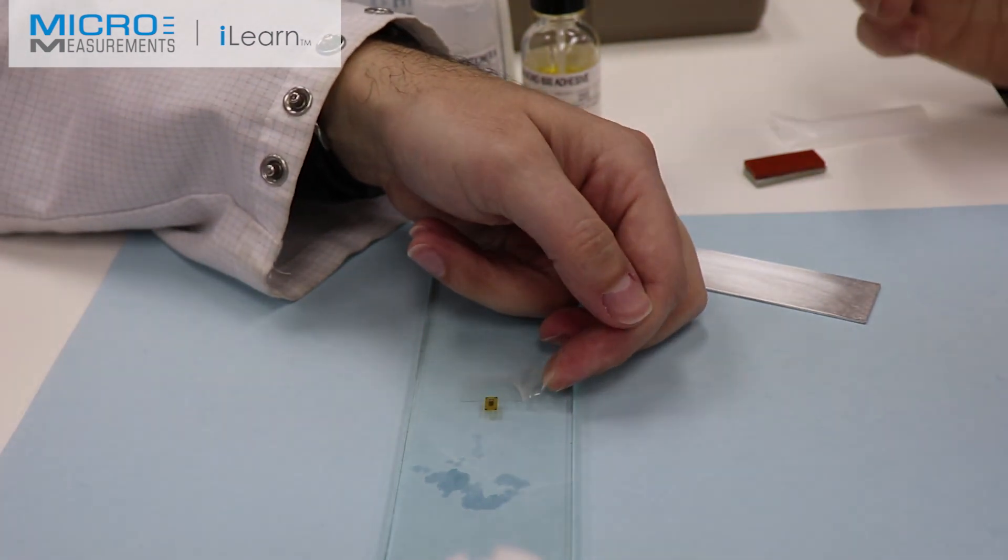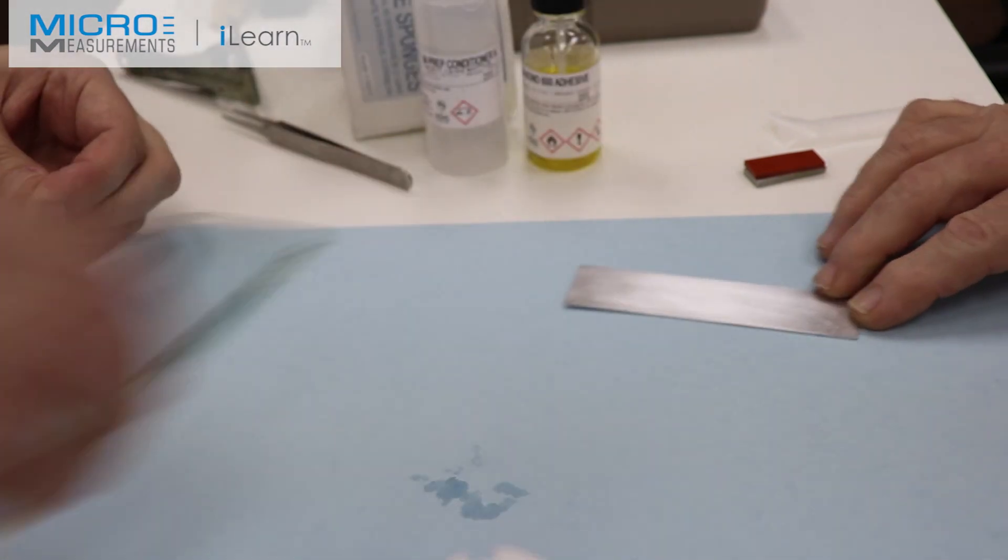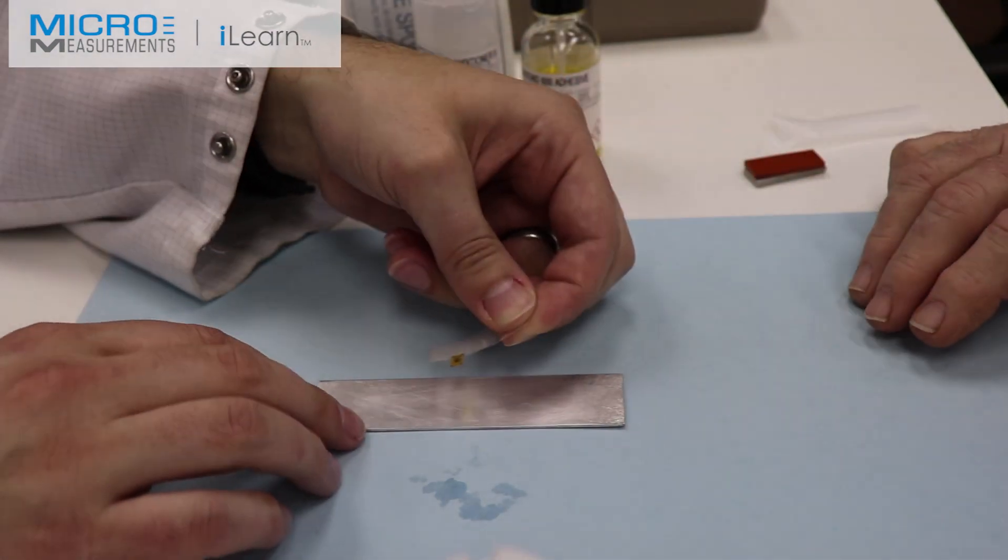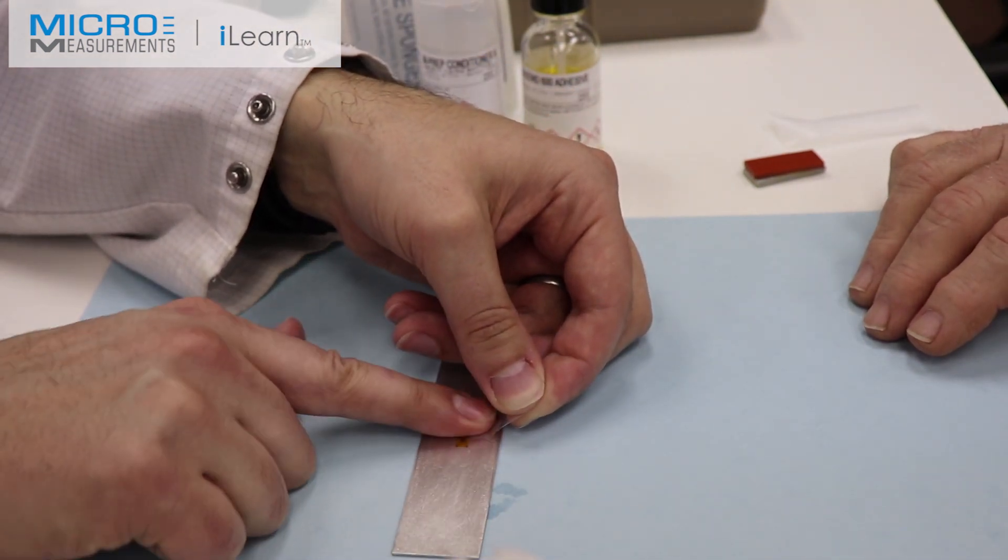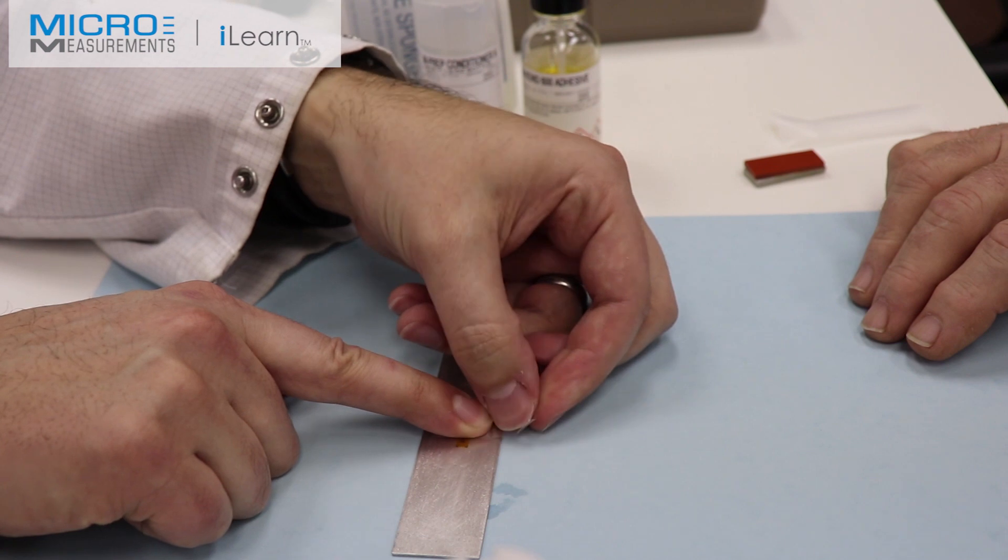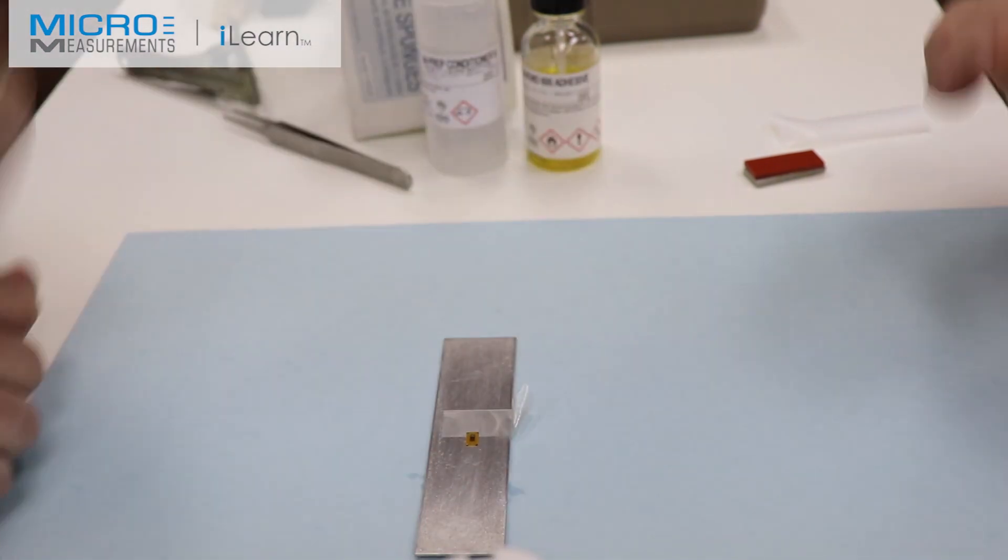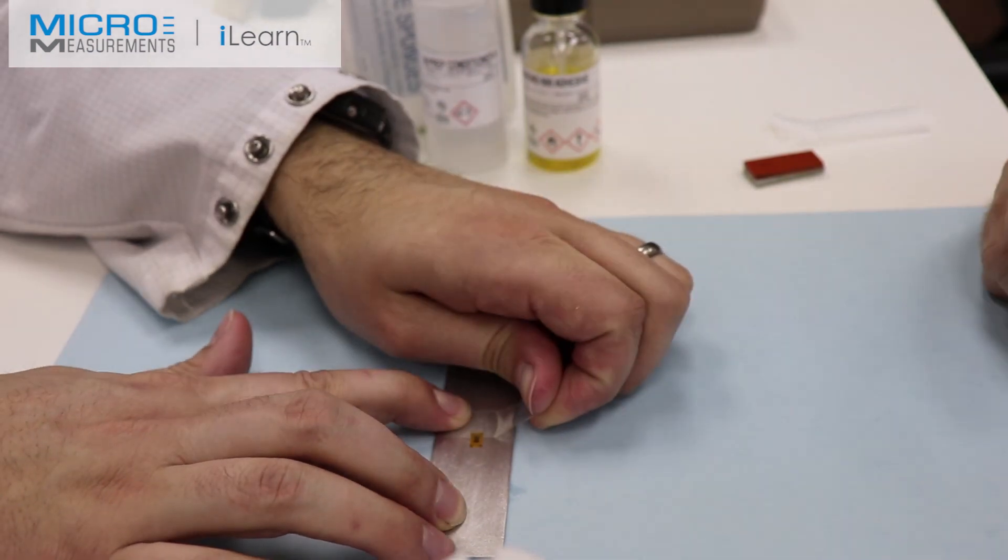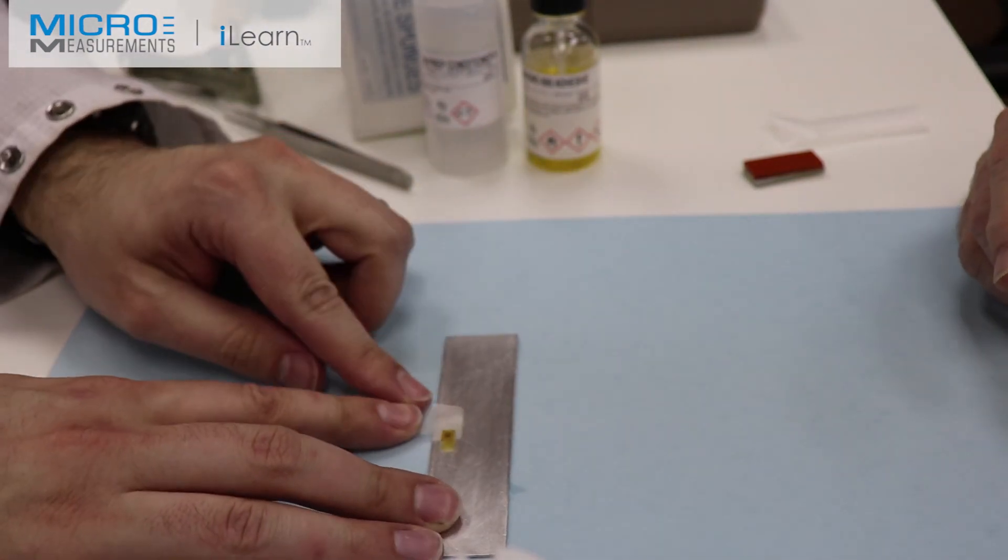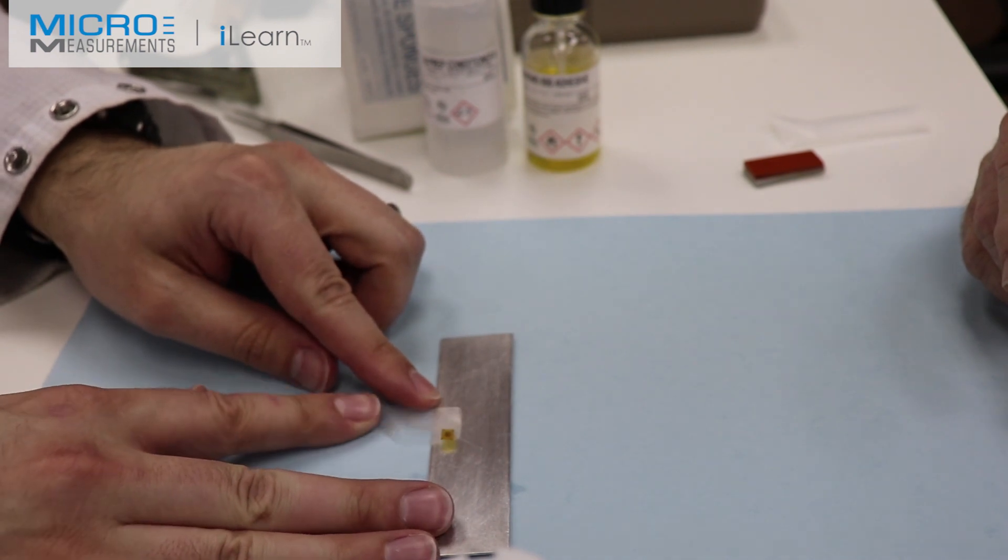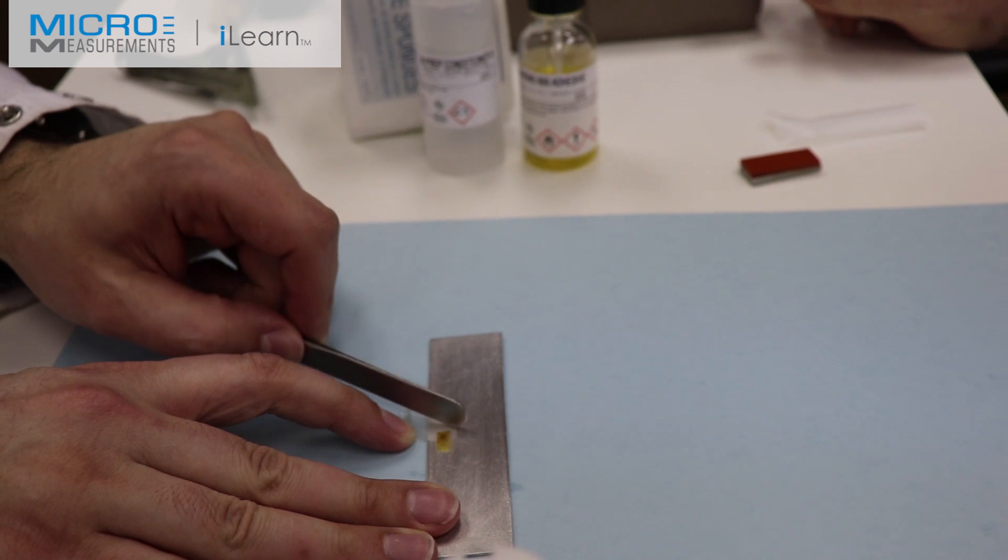He'll now, at a shallow angle, lift that off of his glass plate, transfer it to his beam. Making sure it's properly aligned, and then he'll expose the bonding surface of the gauge. He might crease that tape with his tweezers or something to manipulate it.